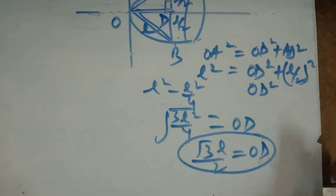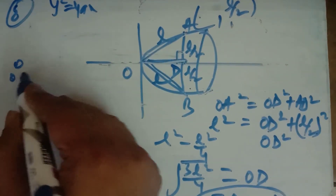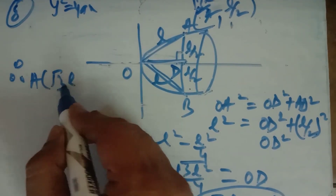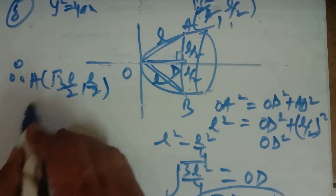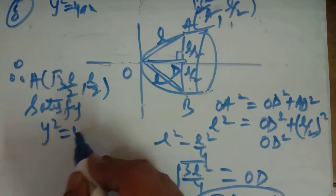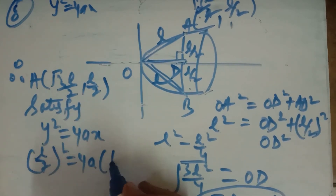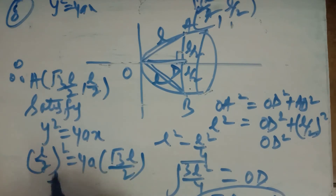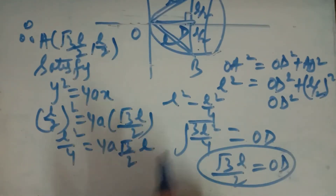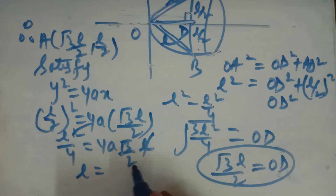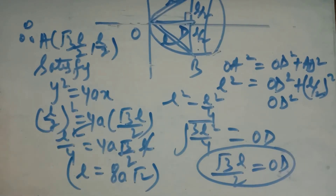So OD = √3L/2. Therefore the coordinates of point A will be (√3L/2, L/2). This point will satisfy the equation of the parabola Y² = 4AX. So (L/2)² = 4A × (√3L/2), i.e., L²/4 = 4A × √3L/2. Solving: L = 8√3A. So 8√3A is the length of the equilateral triangle inscribed in the parabola.